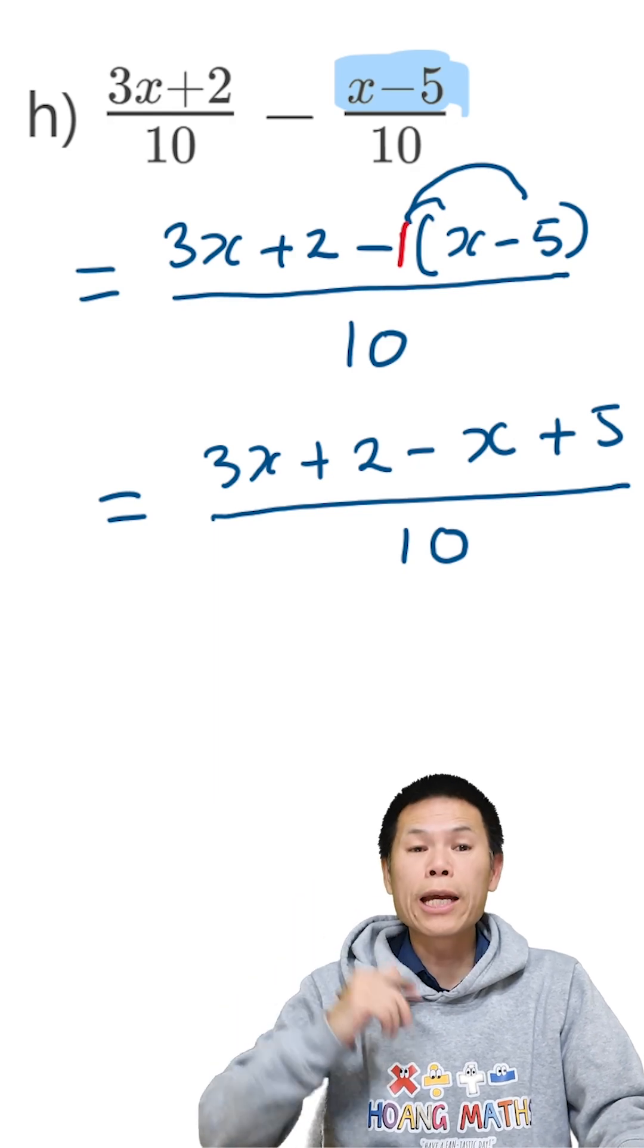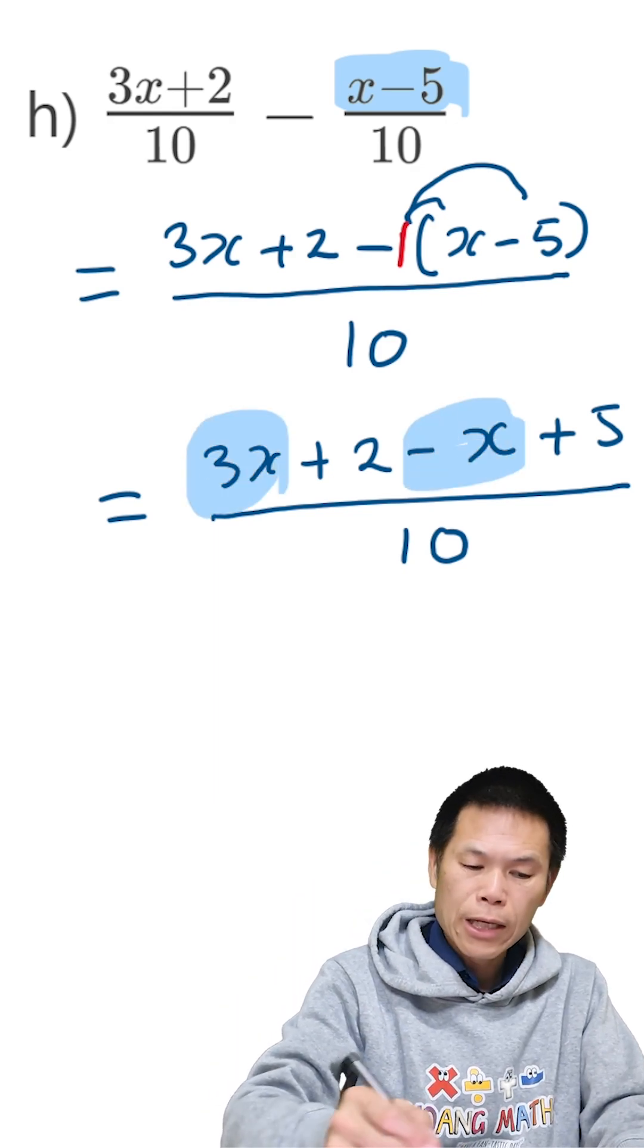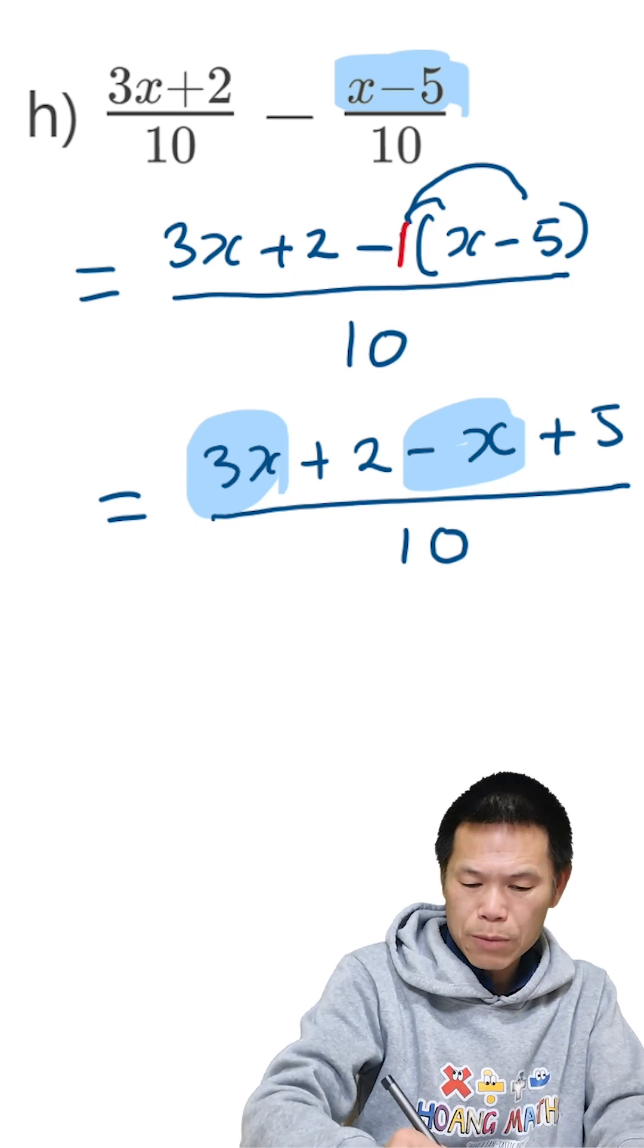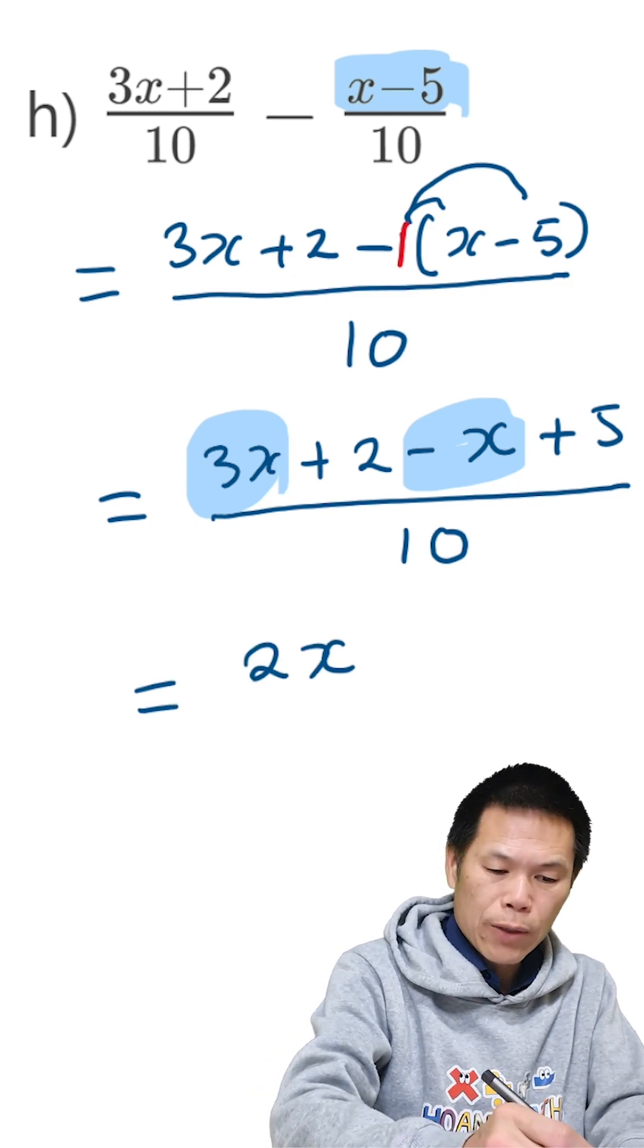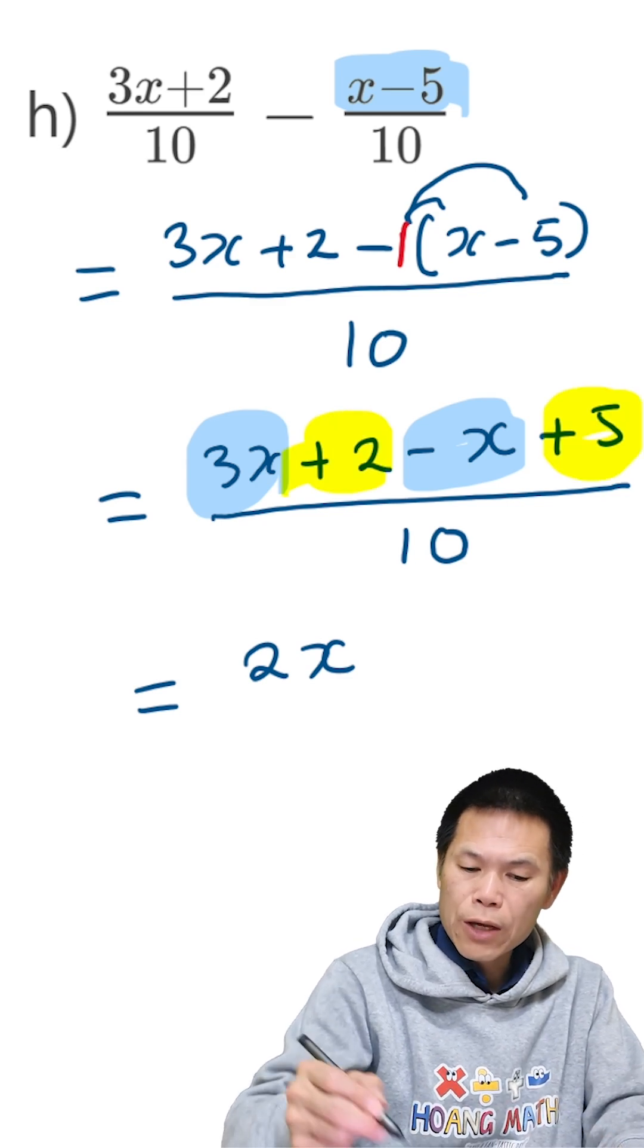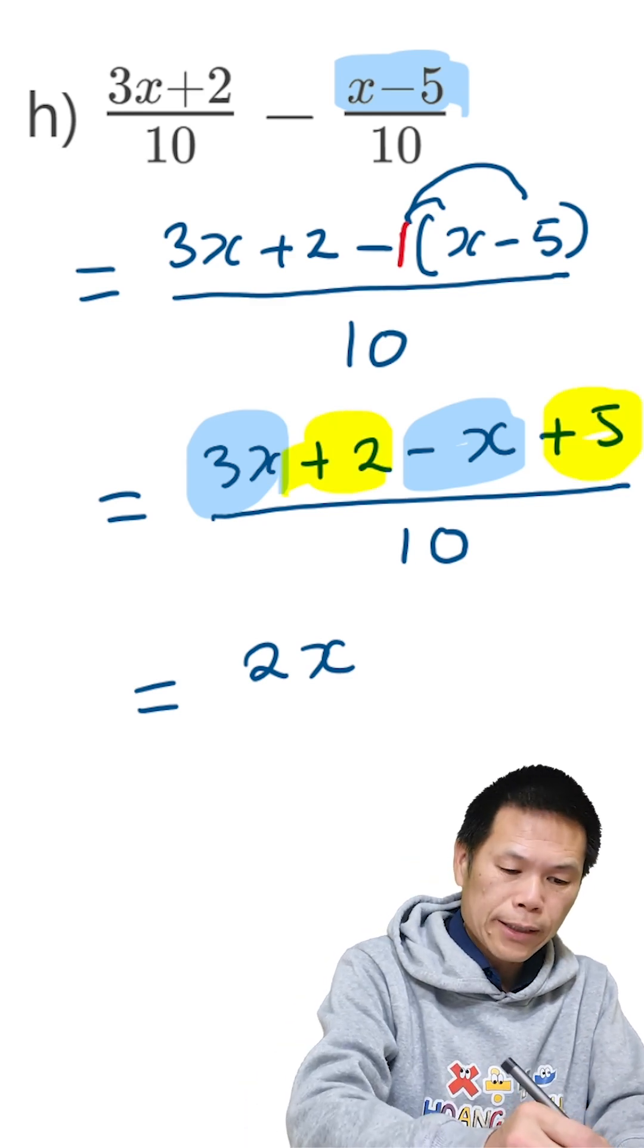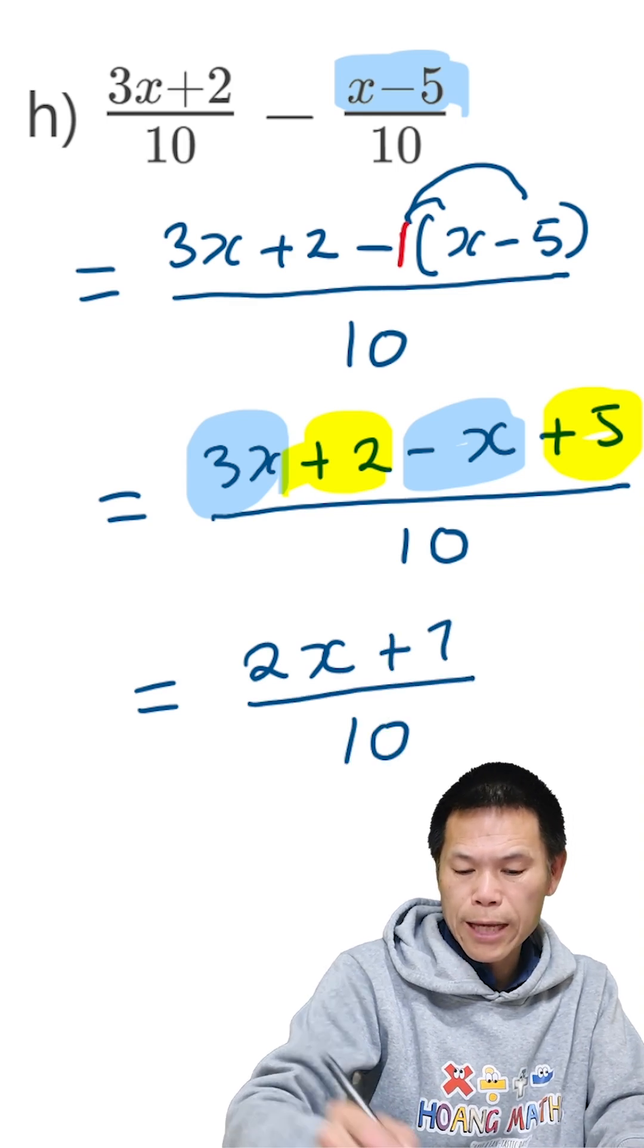Now what we do, we collect the like terms. So we have 3x, we minus x, so 3 minus 1 give me 2, the answer is 2x. And we have 2, we add 5. So 2 plus 5 is 7, so which is plus 7, over 10.